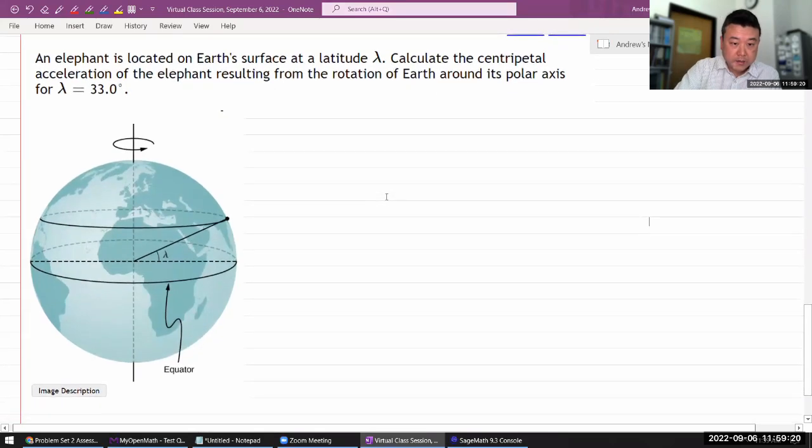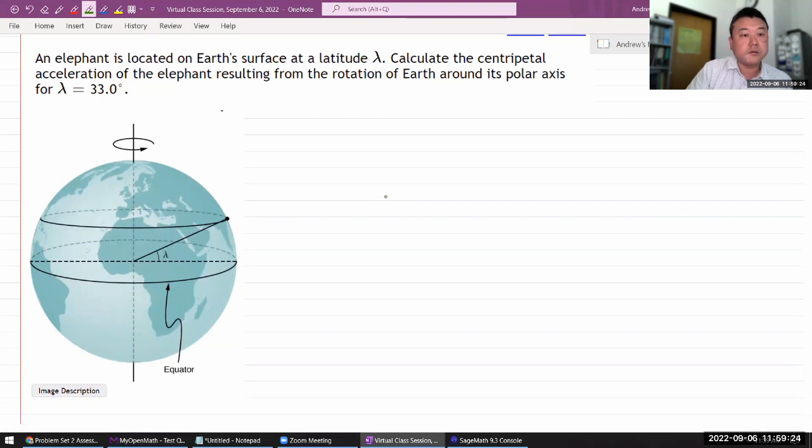Let me get started here. It says an elephant is located at some latitude lambda. I think I'm going to treat this as an angle. Calculate the centripetal acceleration of the elephant resulting from the rotation of Earth around its polar axis for this value of lambda.